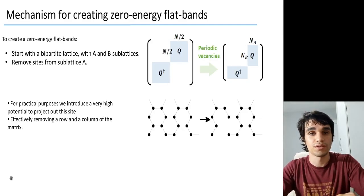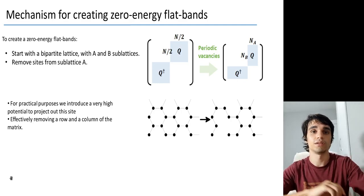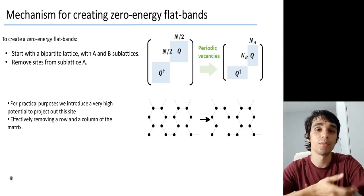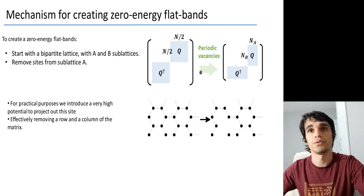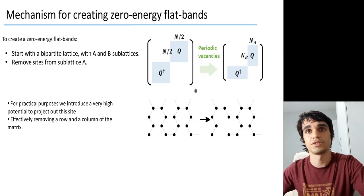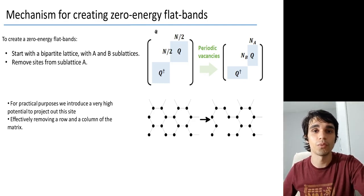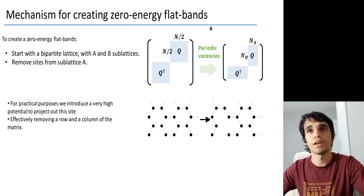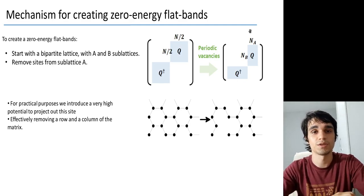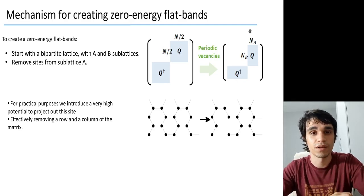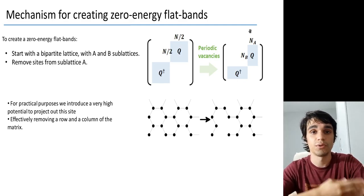To create these zero-energy flat bands, we propose the following procedure. You start with a bipartite lattice, then you enlarge your unit cell, and then you remove sites from one of the sublattices. The picture is the following. You start with a matrix such as this, and then the removal of some sites corresponds to removal of one row and one column of this matrix. Then you go to the following picture, where your Q matrix is not square anymore. And from the propositions as before, you must have a zero eigenvalue independent of the value of momentum, meaning that you have a zero-energy flat band.